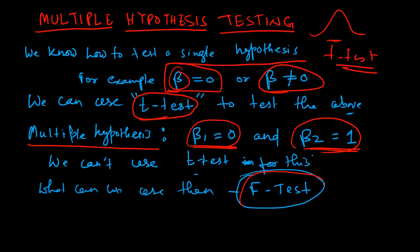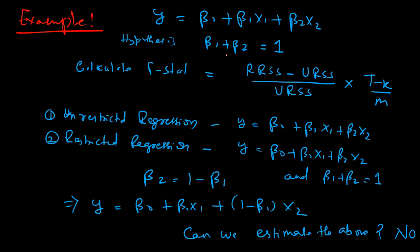What we can use is the F-test. The F-test is suitable for testing multiple hypotheses at the same time. Let us take an example to understand this. We have the regression equation y equal to beta 0 plus beta 1 x1 plus beta 2 x2. The hypothesis we want to test is whether beta 1 plus beta 2 is equal to 1 — that is the null hypothesis — and the alternative hypothesis is that it is not equal to 1.